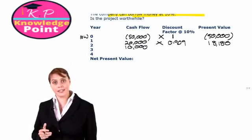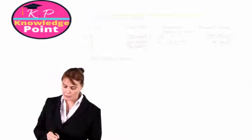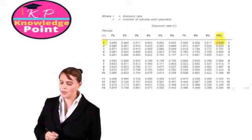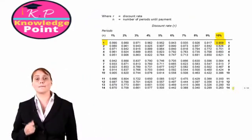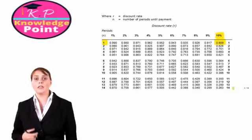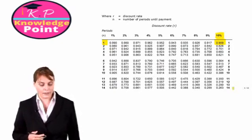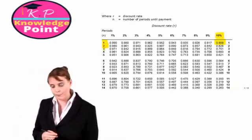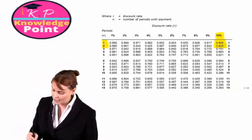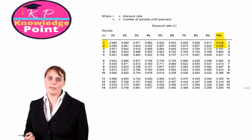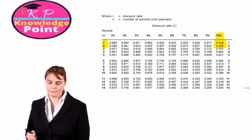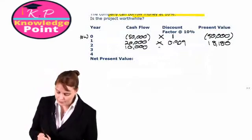Now we need to check our discount factor. Let's go back to our tables. Our discount rate is still 10%, except now the number of time periods is 2. So N will be equal to 2, which means our discount factor in the 10% column is 0.826.